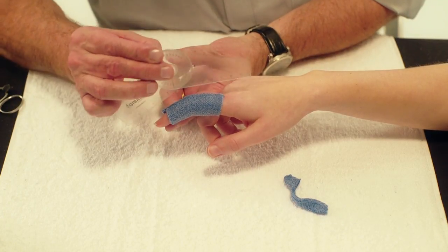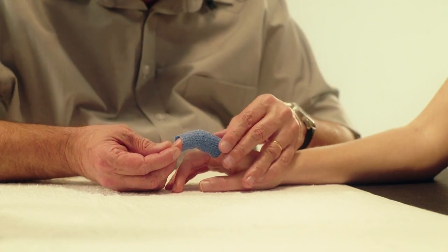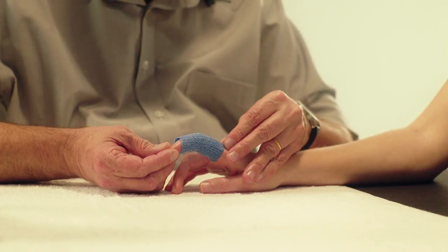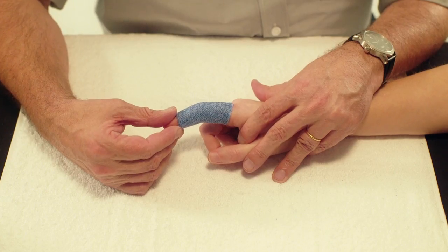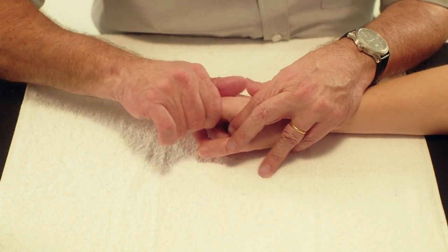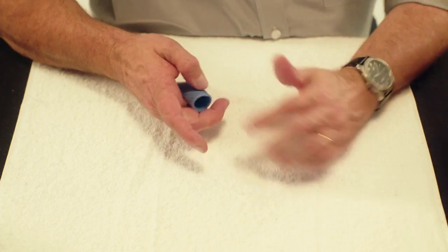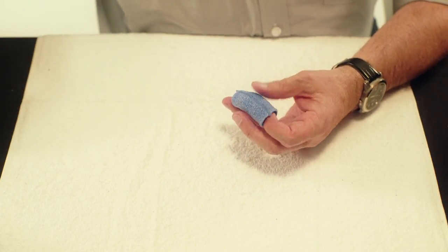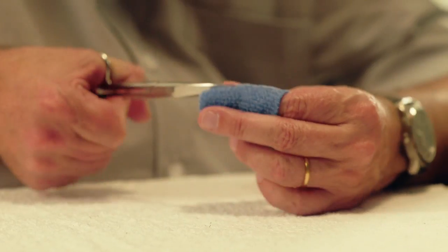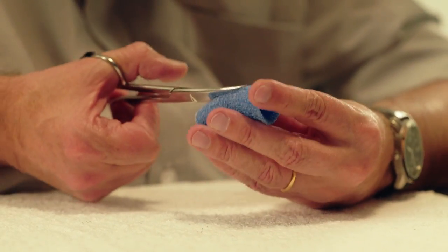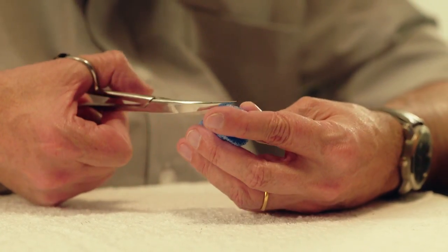Once the orthicast has hardened, remove it from the finger. Trim away the dorsal part of the PIP joint with scissors. Do this generously to allow full flexion.